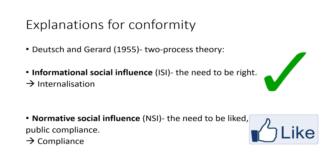Now we have the explanations for conformity. These were put forward by Deutsch and Gerard in 1955 as a two-process theory — two main reasons why people conform. The first is informational social influence, which is the need to be right. I remember this because information is generally correct, it is normally right. So in times of crisis or a new situation, you look to somebody who seems to have more knowledge and you follow that, internalising it as the way to act.